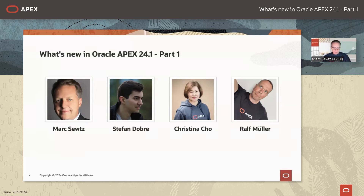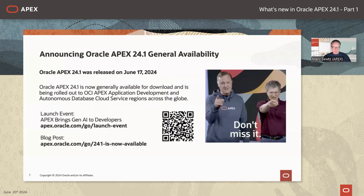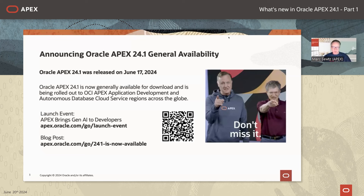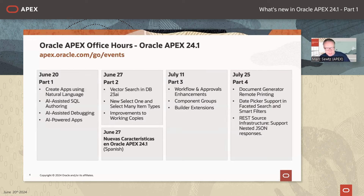APEX 24.1 was released on Monday, June 17th. There's a link to the launch event video and blog post, and a QR code as well. Unlike past releases, we launched everything on that day — apex.oracle.com was upgraded, APEX 24.1 for on-premise installation is available for download from OTN, and we started the OCI automatic upgrades, so over the next couple of days you'll get APEX 24.1 in all regions.